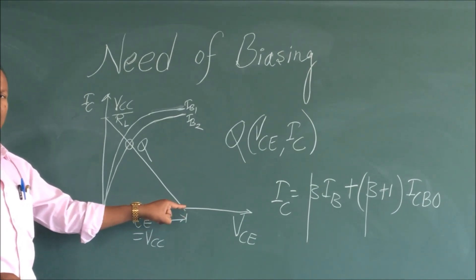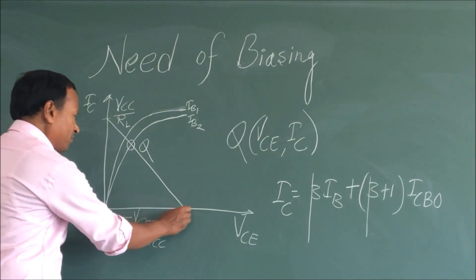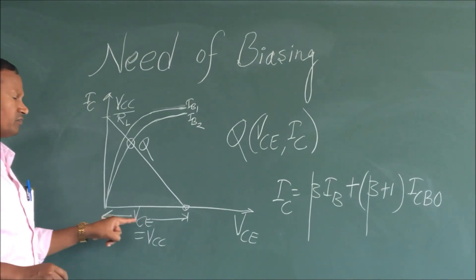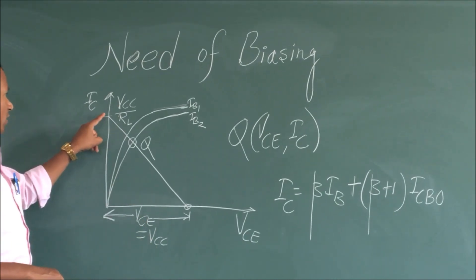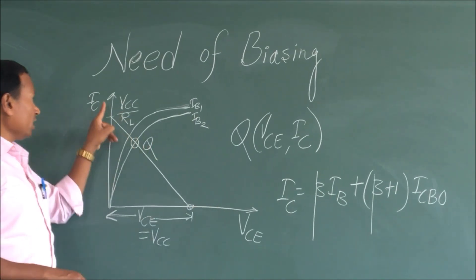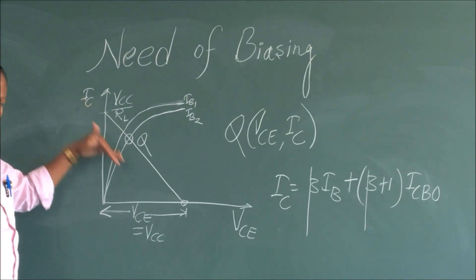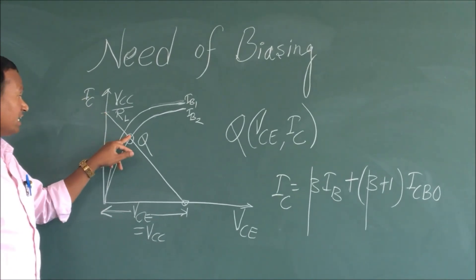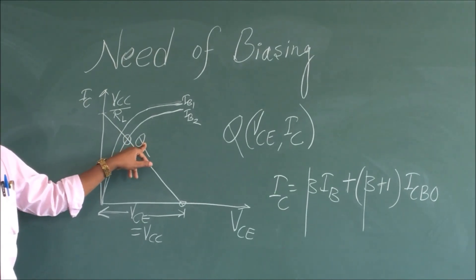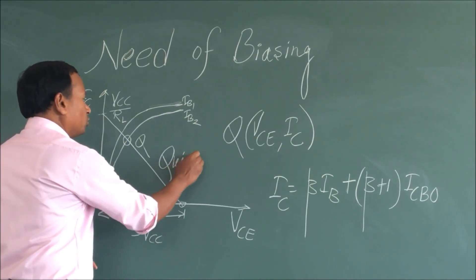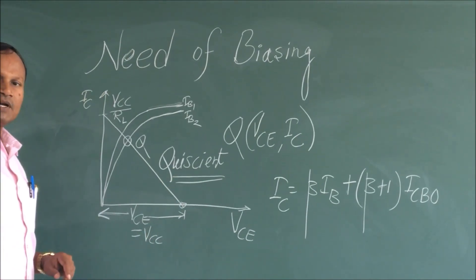What is the load line and how do we get it? The load line is drawn between two extremities. One is when IC equals zero, VCE equals VCC. And on the other axis, when VCE equals zero, IC becomes VCC divided by RL. Wherever the load line intersects the characteristic, that particular point of intersection is called the Q-point. Q means quiescent point, which is also called the operating point.